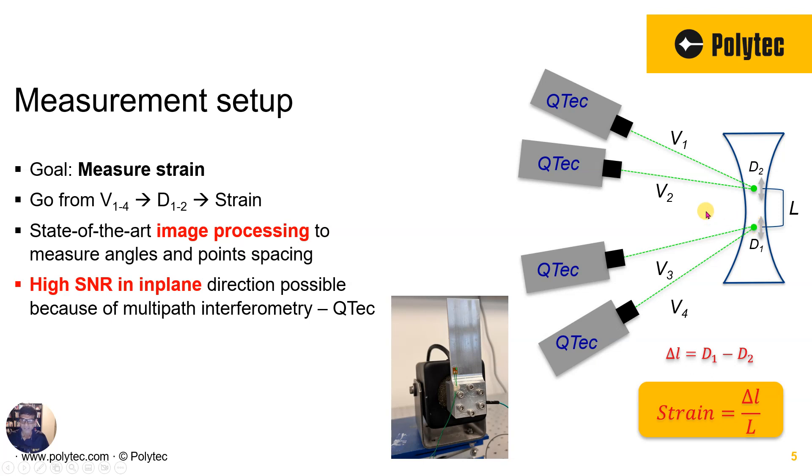Now, you can imagine that another part that is also very important is that we are measuring at an angle, and we are after this in-plane component. So the noise floor has to be the absolute minimum, bare minimum. And this is where the QTEC or the multipath interferometry comes into picture. This is the next generation, the game changer in terms of vibrometry. We have done several videos on it. Absolutely have a look at it.